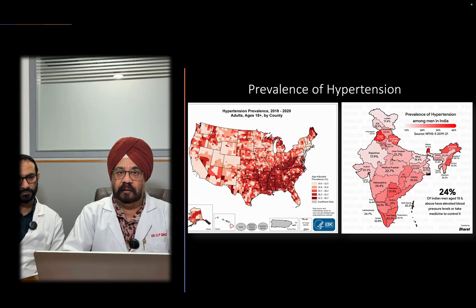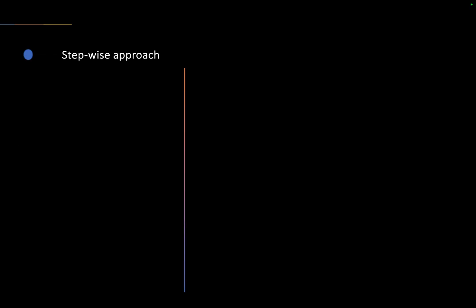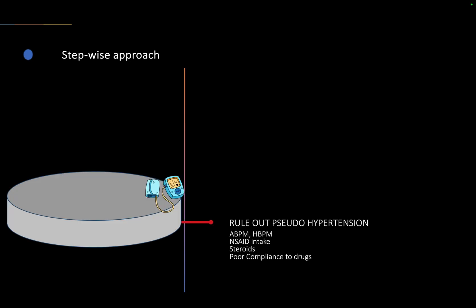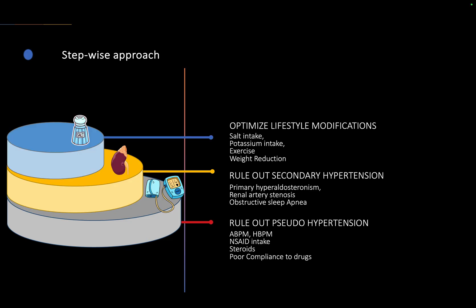Resistant hypertension is very prevalent worldwide and accounts for about 20% of the total hypertensive population. We need a stepwise approach: first rule out pseudo-hypertension using ambulatory blood pressure monitoring, check for NSAIDs, steroids, or excessive salt use, and then rule out secondary causes. Primary hyperaldosteronism and obstructive sleep apnea are the most common secondary causes.